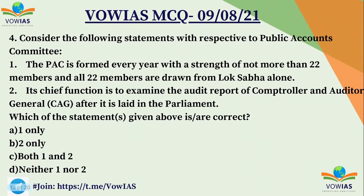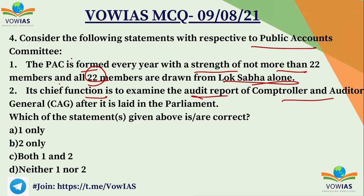Fourth question. Consider the following statements with respect to the Public Accounts Committee. Statement one: the Public Accounts Committee is formed every year with a strength of not more than 22 members and all 22 members are drawn from Lok Sabha alone. Statement two: its chief function is to examine the audit report of CAG after it is laid down in parliament. Choose the correct answer: A. One only. B. Two only. C. Both one and two. D. Neither one nor two.